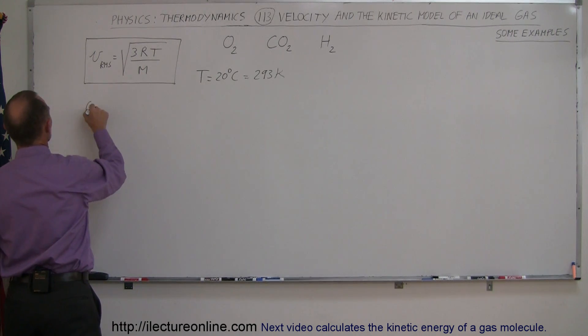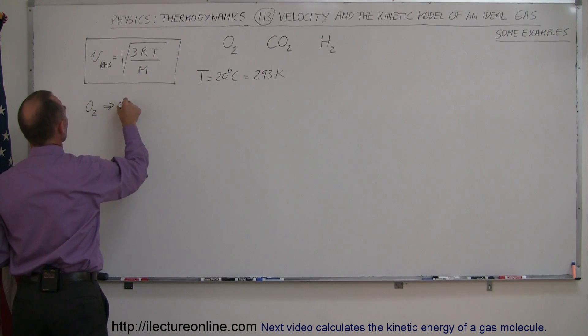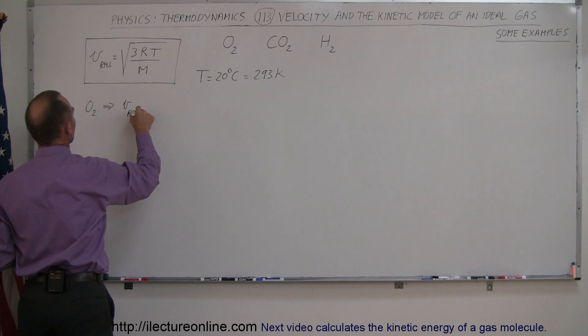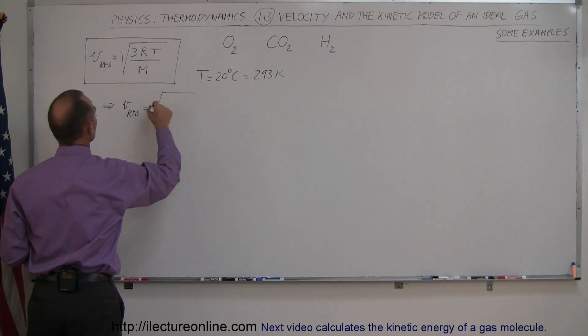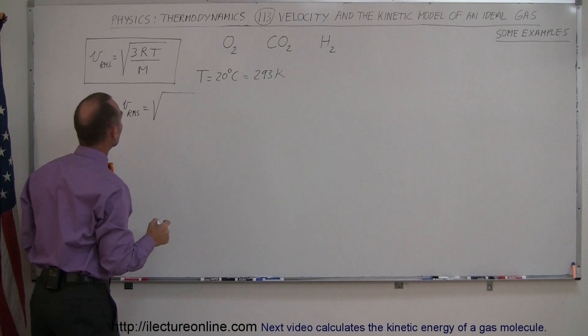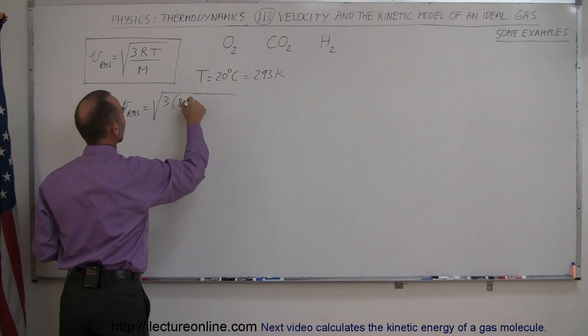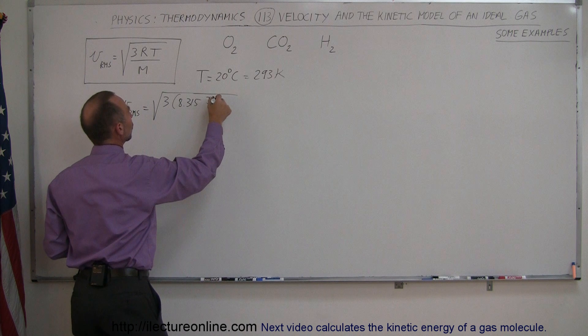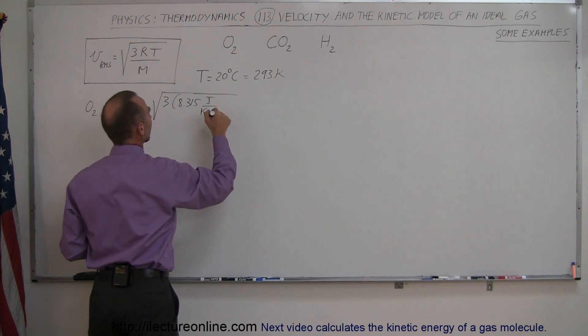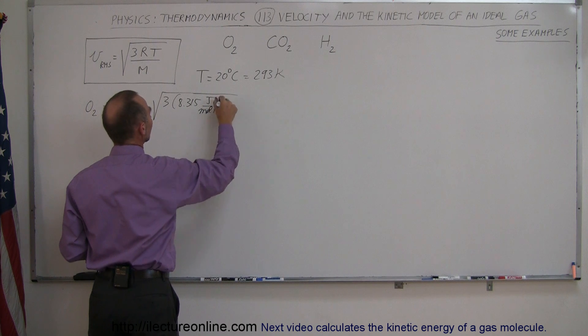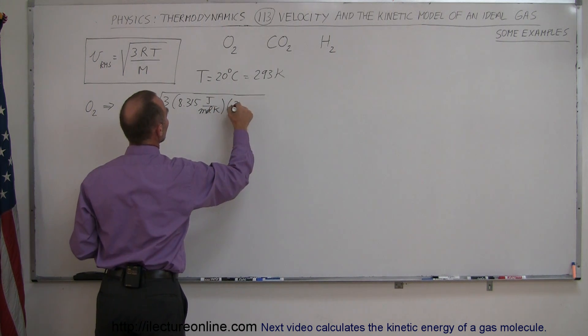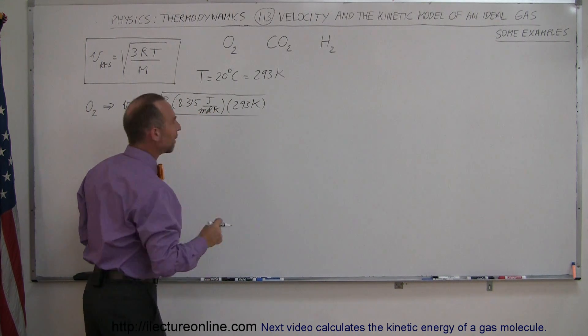Let's start with oxygen. vRMS is equal to the square root of three times the gas constant, which is 8.315 joules per kelvin per mole times kelvin. I like to put moles first, mole times kelvin, times the temperature of 293 kelvin, and divide the whole thing by the molar mass.